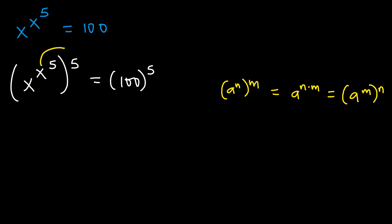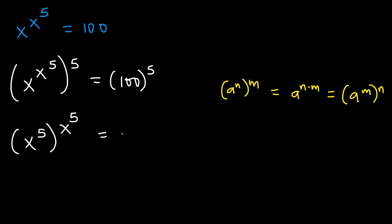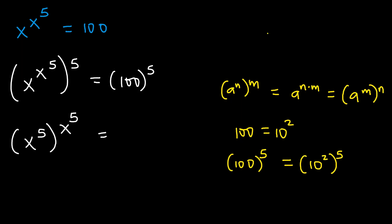Therefore, we shall take x to the power of 5 to the outside and then bring 5 to the inside. This will give us x to the power of 5, raised to the power of x to the power of 5, equaling to — now 100 is the same as 10 raised to the power of 2. Therefore, 100 to the power of 5 will be equal to 10 to the power of 2 raised to the power of 5.